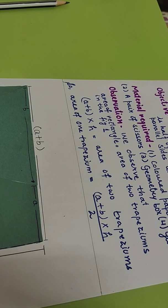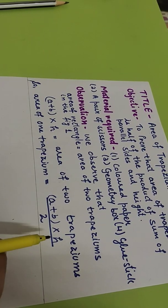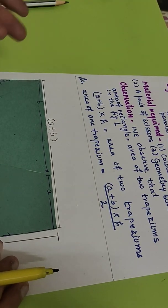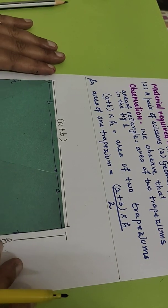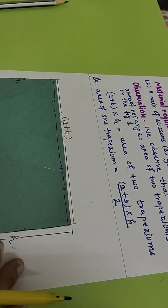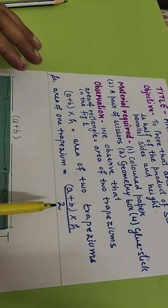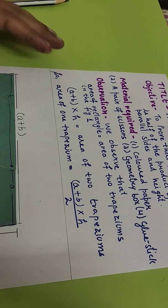In this activity, we followed the method of going from the known to the unknown. We knew the formula for the area of a rectangle, and using that, we reached the unknown result — the area of a trapezium. You can practice deriving more results yourself by developing your thinking. After doing this activity, you will never forget the area of a trapezium. I hope you enjoyed this — thank you so much!